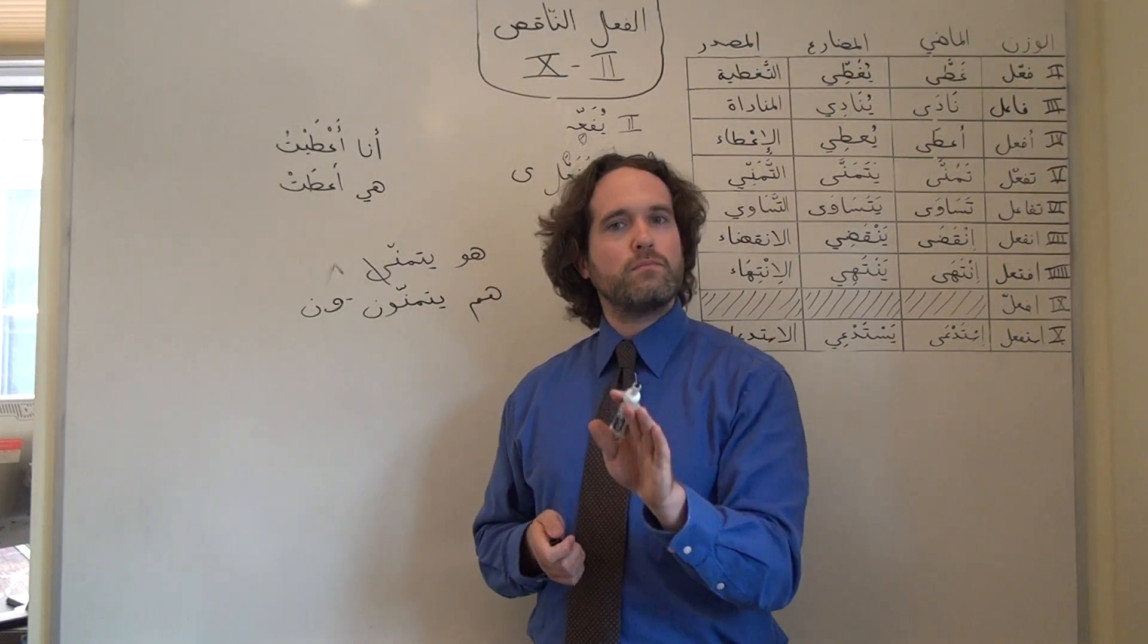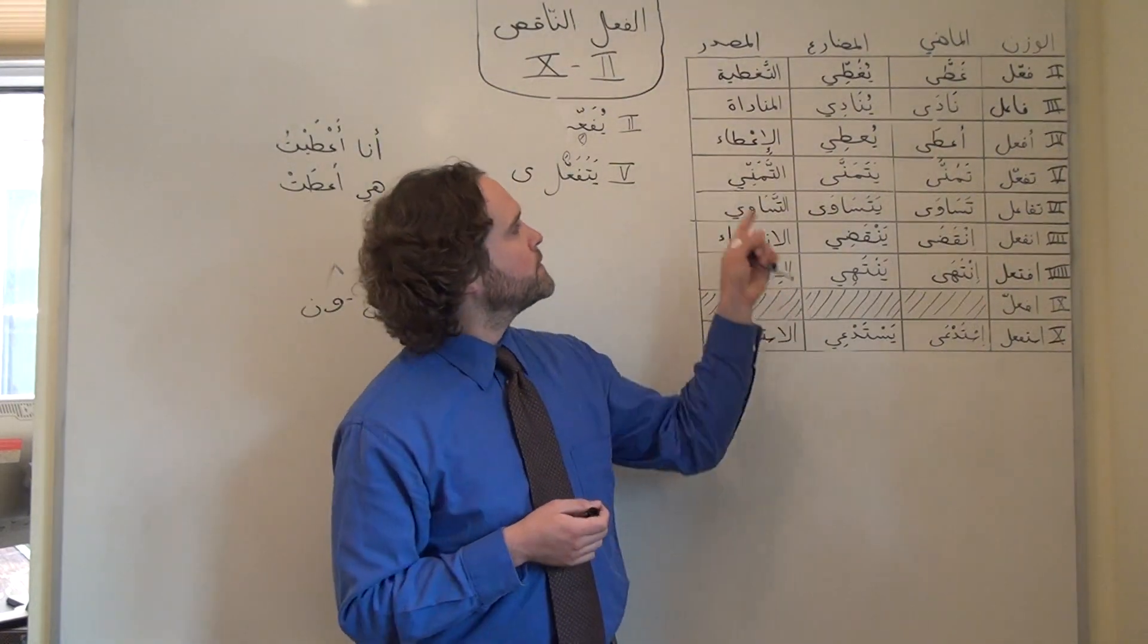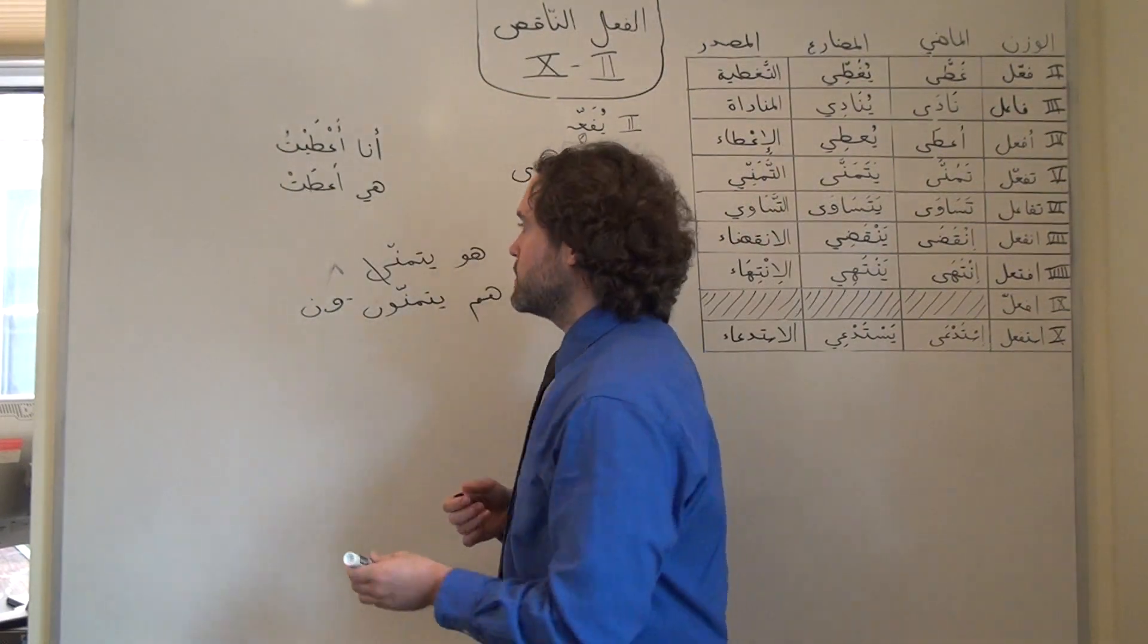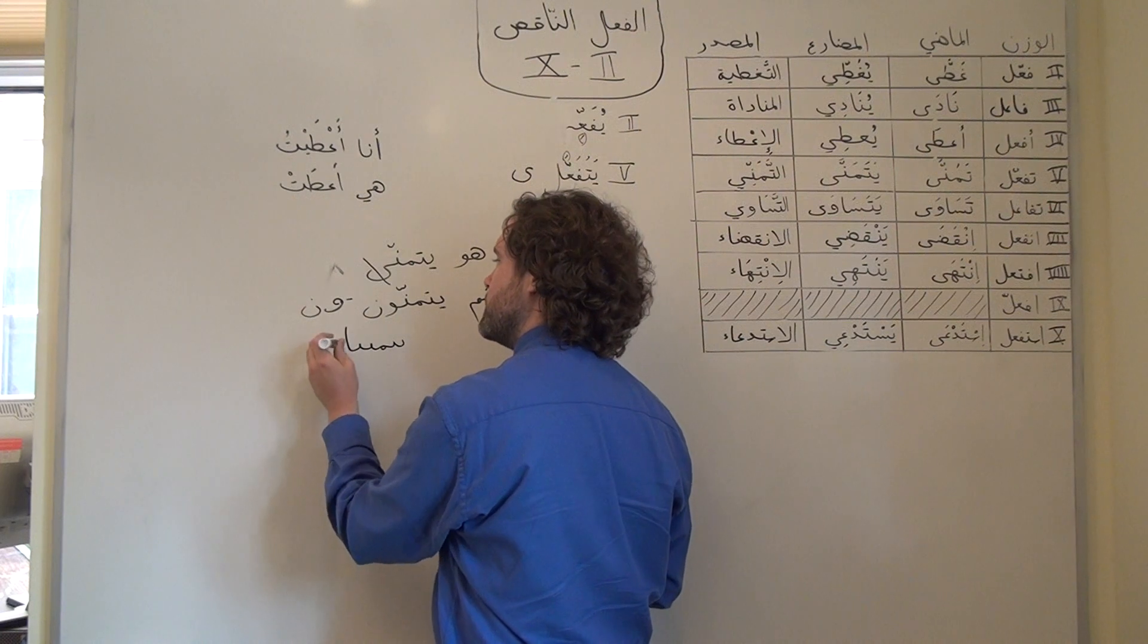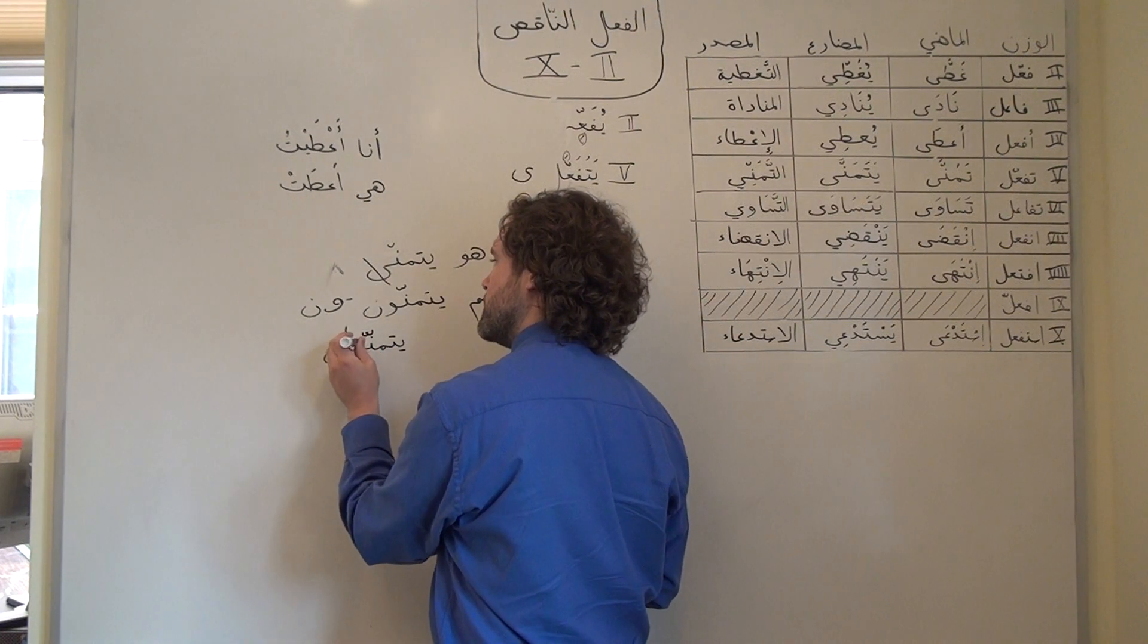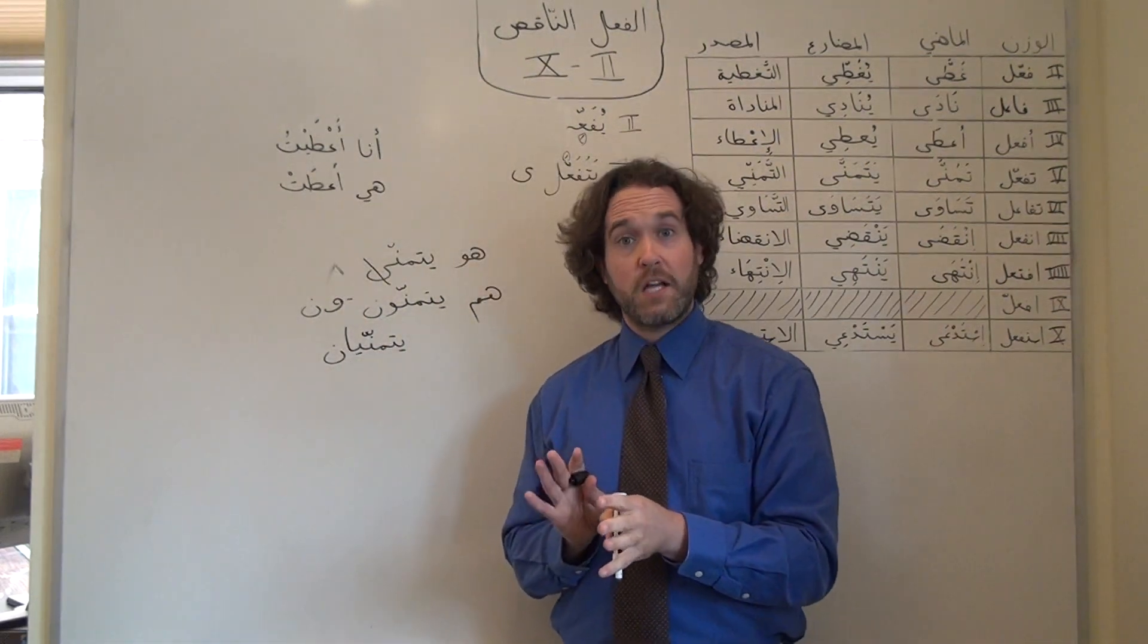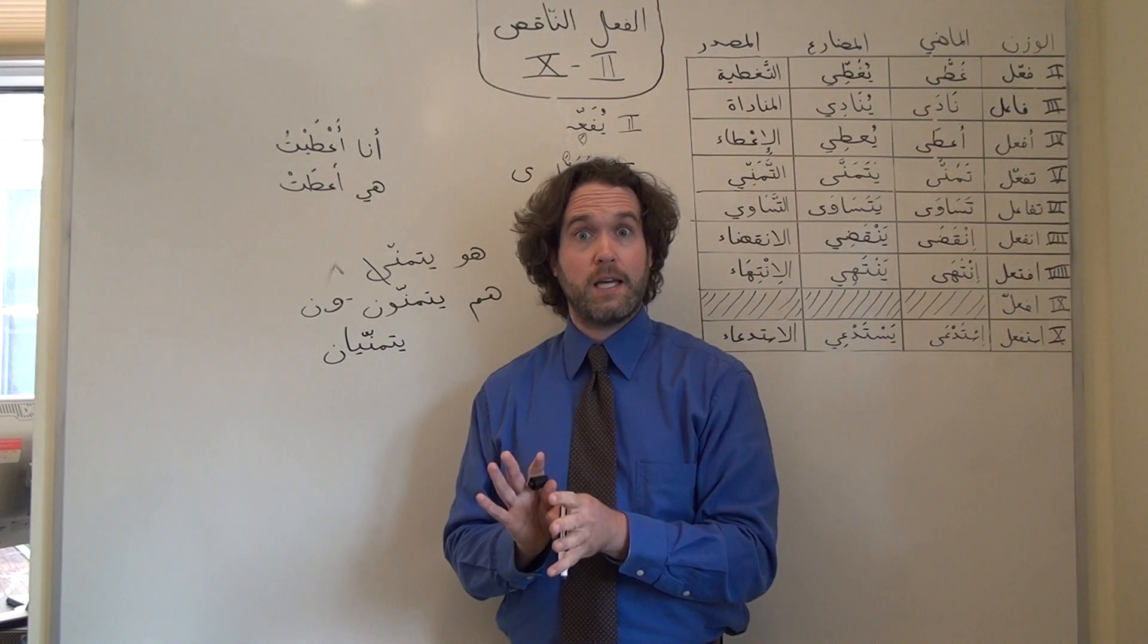The one exception again is dual forms. So we would always keep the يا and say for example يتمنيان. And there's a case where the ألف مكسورة is going to turn into a يا, but that's also highly predictable. We can assume that that's what's going to happen in a case like that.